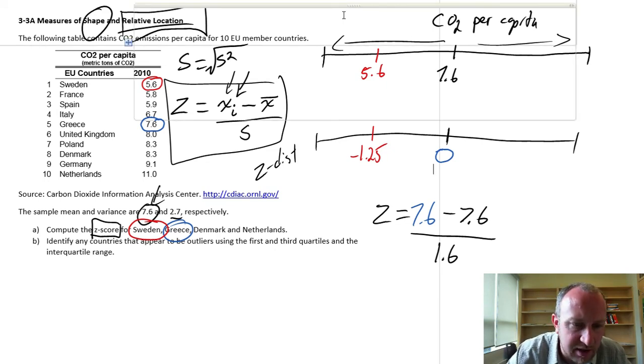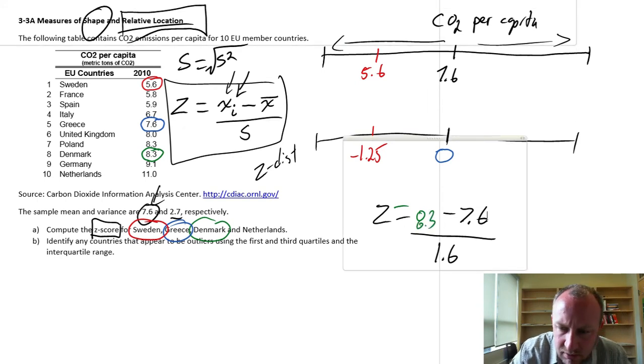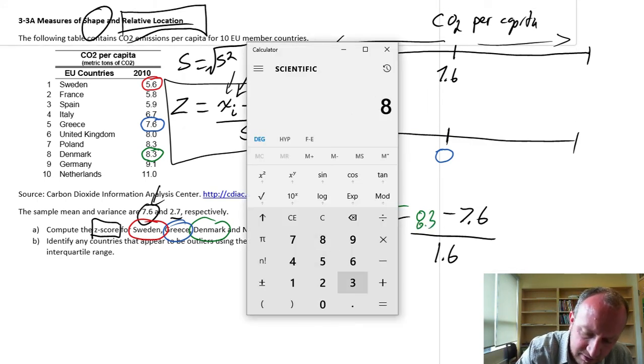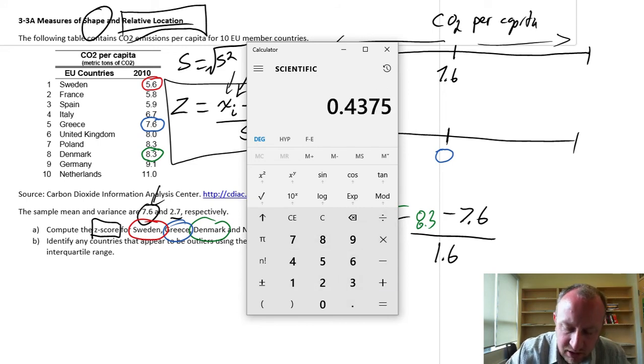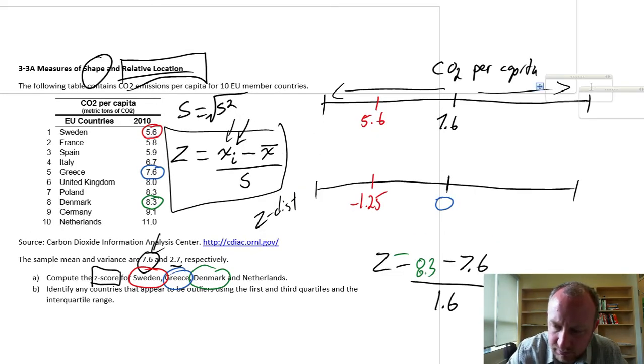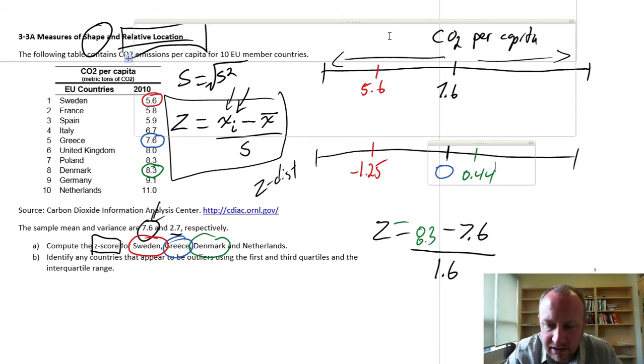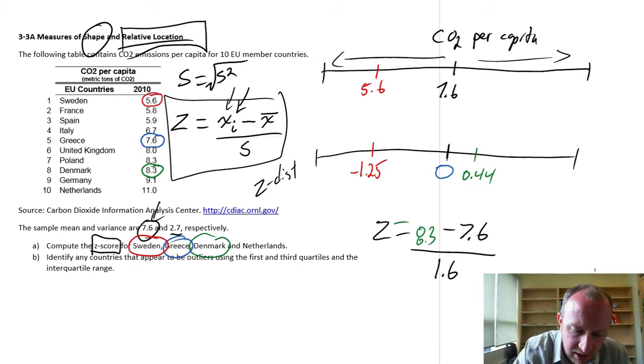Next one, Denmark. So Denmark will be green. This is 8.3. So 8.3 minus 7.6 divided by 1.6. So this is, let's round it to 0.44. So that's 0.44 standard deviations from the mean.